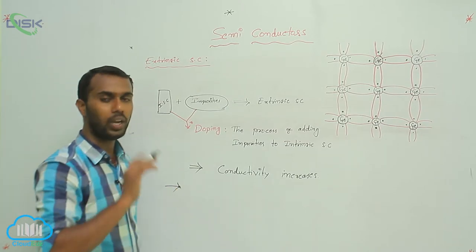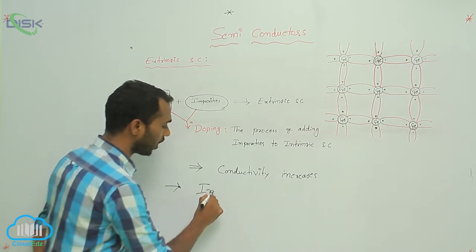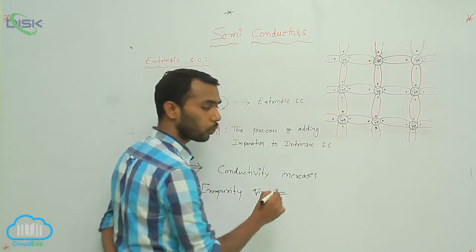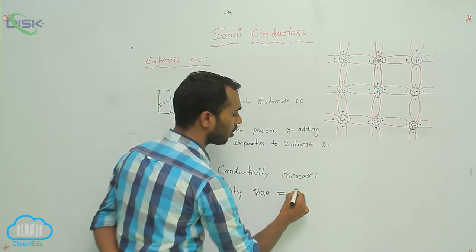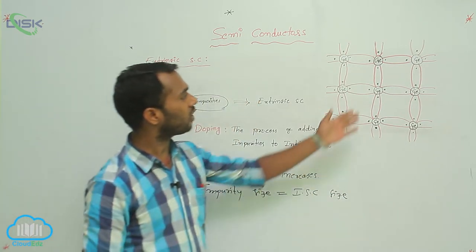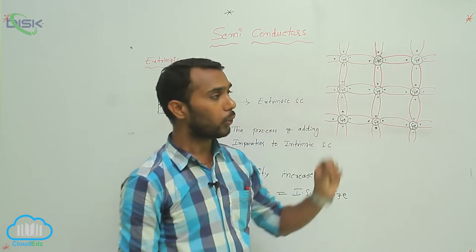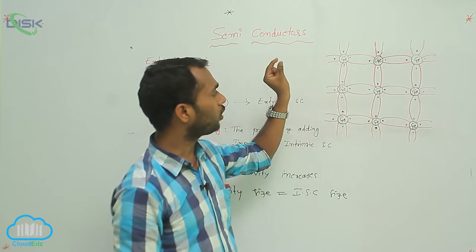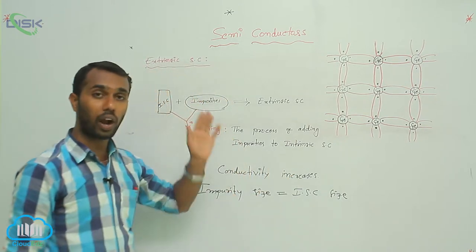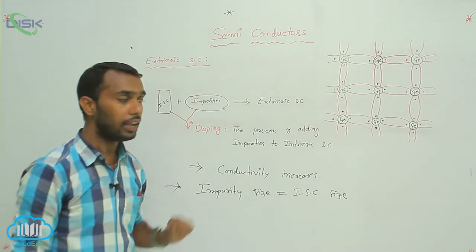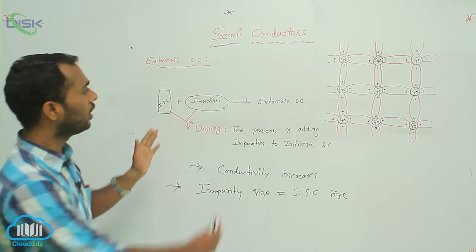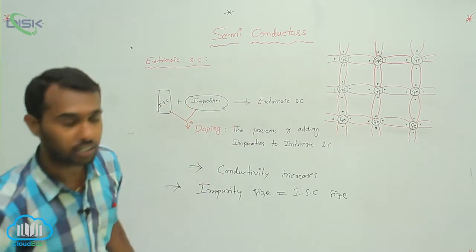So we add impurities to increase conduction. But which impurity should we select? The impurity size must be equal to the intrinsic semiconductor atom size. For example, if I take germanium, the impurity atom size must be equal to the germanium atom size. We have around 120 elements in the periodic table — to understand which one to select, let me draw a simple periodic table structure.